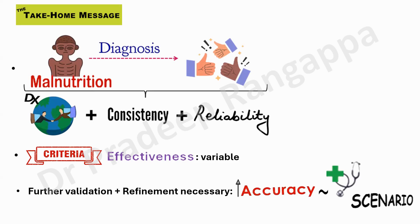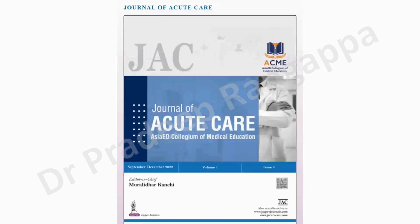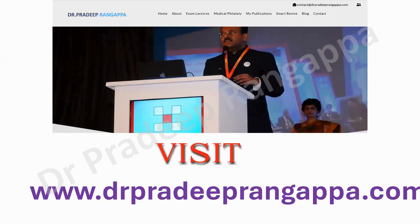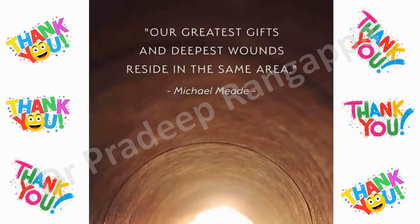So that's about GLIM. What trainees need to remember: it has two broad categories — etiological and phenotypic criteria — and one out of each qualifies someone as malnourished, with only two stages: moderate or severe. The take-home message is that GLIM helps in the diagnosis of malnutrition in a consensus-based, globally accepted, consistent, and reliable way. It can be asked as an exam question or short note. We will be looking into more studies that come out to assess its validity. Thank you all.